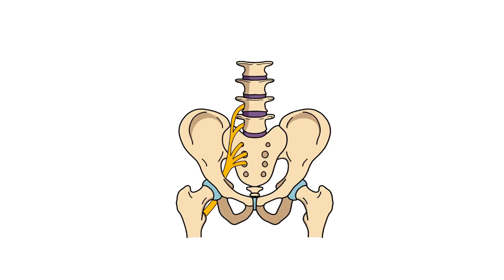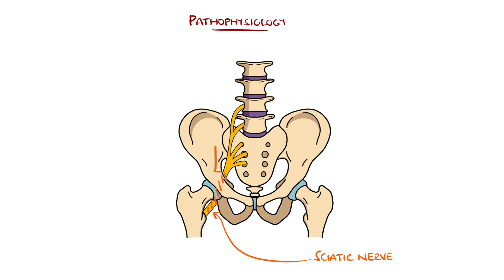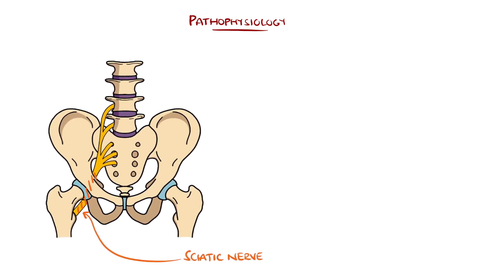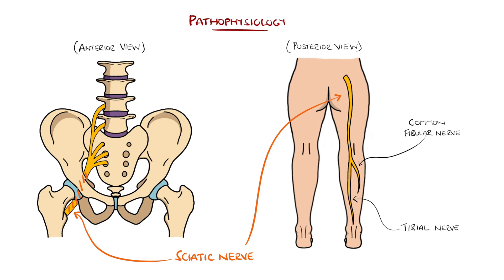In normal circumstances, nerve roots exit via foramina in the spine, the sciatic nerve specifically coming from a collection of nerve roots between L4 and S3, forming the largest nerve in the body that is roughly 2cm thick. The sciatic nerve runs through the pelvis and posterior thigh, splitting into the tibial and common fibular nerves at the popliteal fossa in the knee.